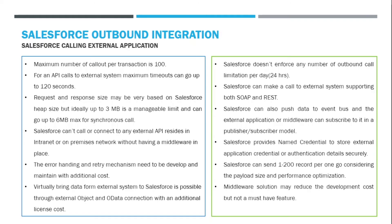There are also out-of-the-box features for outbound integration. Outbound Message is an XML-based notification framework to notify external systems. On top of that, there are streaming APIs available: the Streaming API, Platform Events, and Change Data Capture. If you are doing push notifications through the streaming API, the external application needs to be enabled with CometD, which runs and continuously listens to your streaming events.